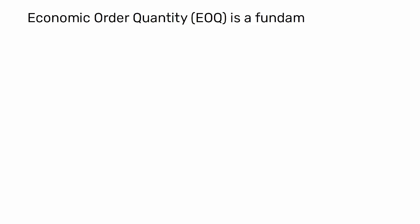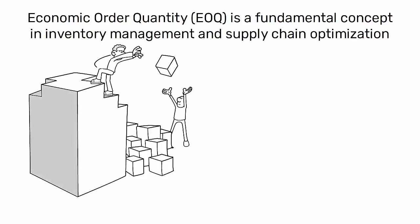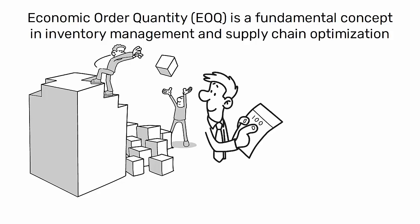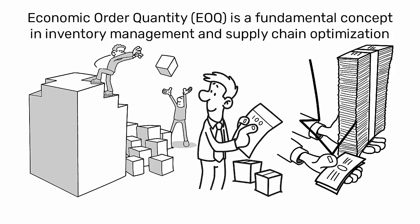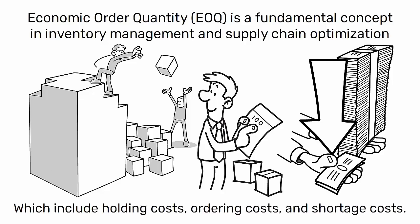Economic Order Quantity, or EOQ, is a fundamental concept in inventory management and supply chain optimization. It represents the optimal order quantity a company should purchase for its inventory to minimize total inventory costs, which include holding costs, ordering costs, and shortage costs.